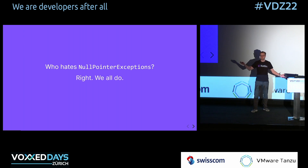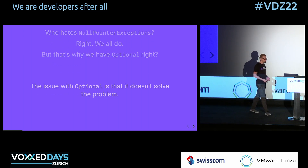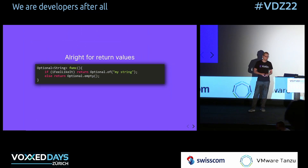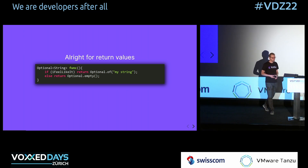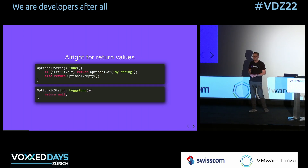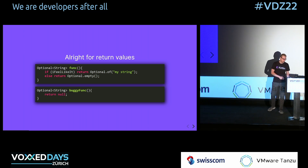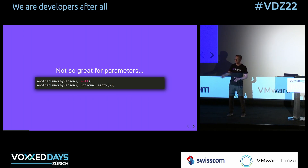Who hates null pointer exceptions? Of course, we all do. That's why we have Optional. But the thing with Optional is that it doesn't solve the problem really — it just wraps it. Options are alright for return values, assuming we have a function that returns an optional string. But nothing keeps me from returning null anyway. Java will let me write that code. It's also not great for parameters, and Java doesn't recommend using Optional for parameters because it's just way easier to pass null than an empty Optional.